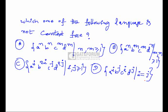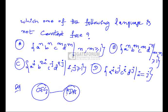Next question: which of the following languages is NOT context-free? Option A: a^n b^n c^m d^m where n, m ≥ 1. Option B: a^n b^m c^m d^n where m, n ≥ 1. Option C: a^i b^(2j) c^j d^(2j) where i, j ≥ 1. Option D: a^i b^j c^i d^j where i = j. A language is context-free if a context-free grammar (CFG) exists and it can be recognized by a pushdown automaton (PDA). Let us check each option.